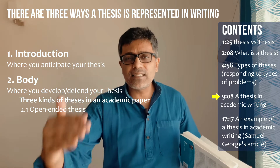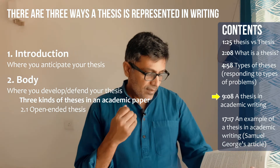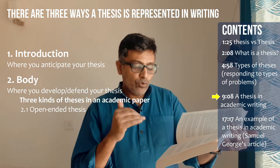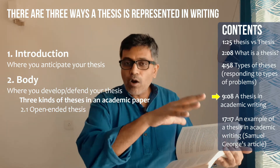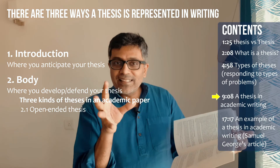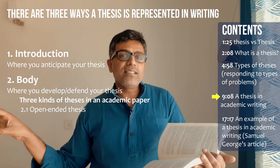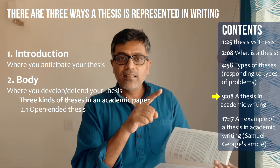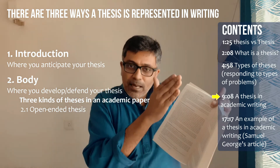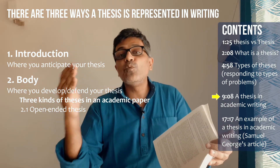There are three kinds of theses in an academic paper. The first is the open-ended thesis, where the author reveals the thesis only at the end. As you're reading the paper, you don't know what the thesis is, but you have a sense of where it's going. By the end, the author says, 'So this is my thesis.' I've given examples of this in chapter 20, where scholars don't reveal their thesis in the beginning but reveal bits and pieces, and only at the end do we find out what the thesis is. The middle is the process where the thesis is built up slowly.